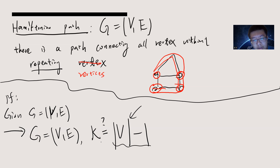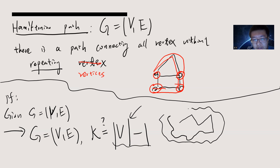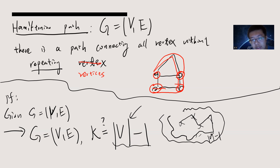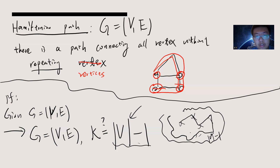You can see by definition that if there exists such a path, that means there is a path connecting all the vertices, and the length is |V| minus 1. If there is a path of length |V| minus 1 with no repeated edges, it must visit all the vertices. And if no such path exists, then there is no Hamiltonian Path, because the Hamiltonian Path must have length |V| minus 1 — it connects all vertices without repeating them, so it must have that length. So yeah, this completes the proof.